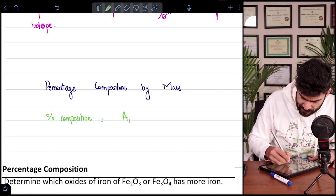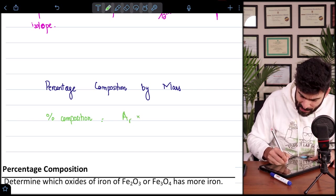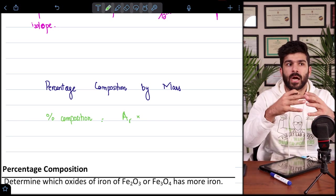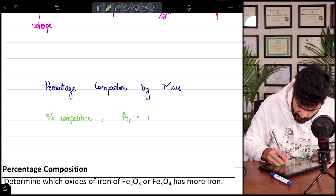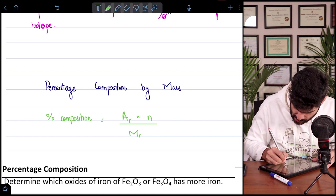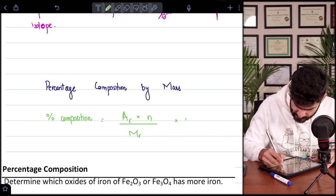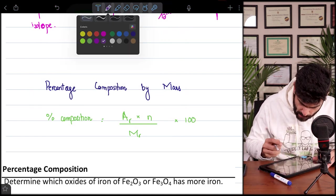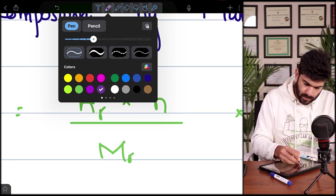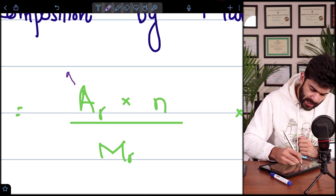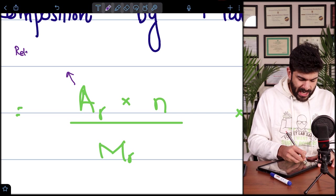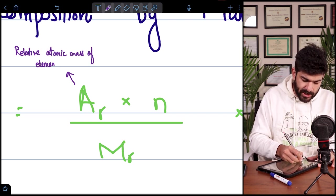So in order to calculate the percentage composition by mass, we are going to have multiplied the atomic mass, the relative atomic mass of the element which is under study, and we multiply it by N. We will discuss what N is, divided by MR and that into 100.